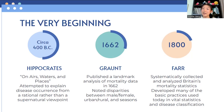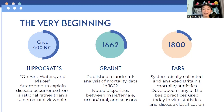William Farr in the 1800s furthered Graunt's work. He collected and analyzed Britain's mortality statistics from the years leading up to the 1800s, and he developed many of the basic practices that we use today in statistics — because epidemiology is statistics, we have to analyze the data that we have. These practices include vital statistics and disease classification.